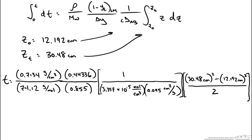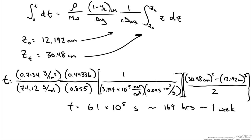Plugging all values into the time equation, we get t equal to 6.1 times 10 to the 5th seconds, which equates to 169 hours — roughly one week — for the 3 liters of ether in this beaker to fully evaporate at 25 degrees Celsius using the assumptions and techniques applied in this video.